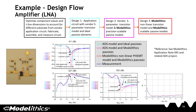In Design 2, an improvement is made by using Model Ethics precision scalable passive models in place of ideal passive elements. Now the shift in the response between simulation and measurement has been improved, but there is still a discrepancy in magnitude. In Design 3, the best agreement between measured data and simulation is achieved by using the Model Ethics nonlinear transistor model in conjunction with the Model Ethics microwave global models for the passive components.